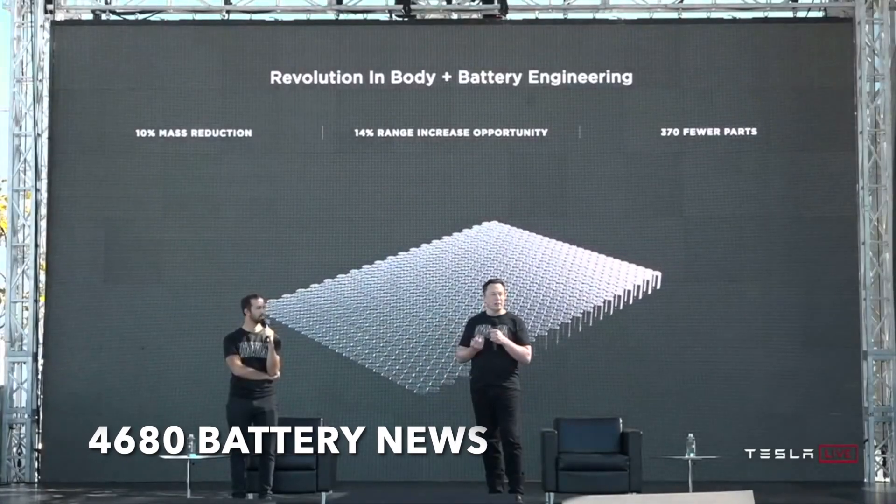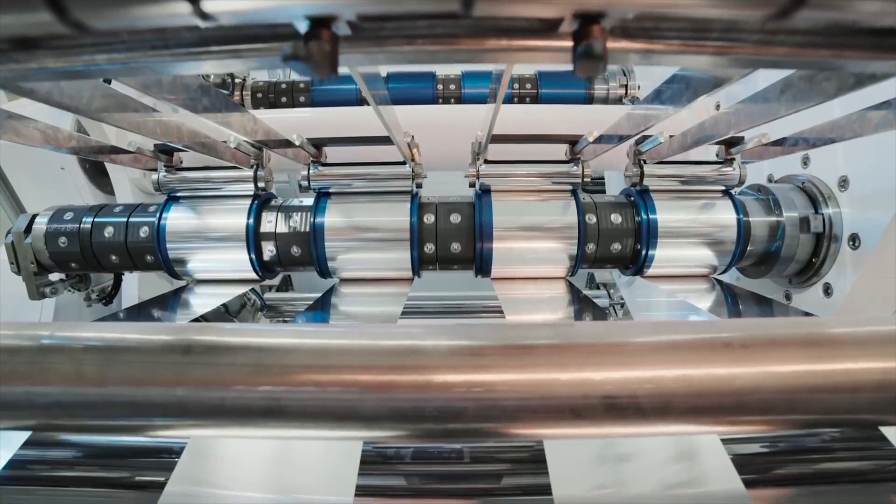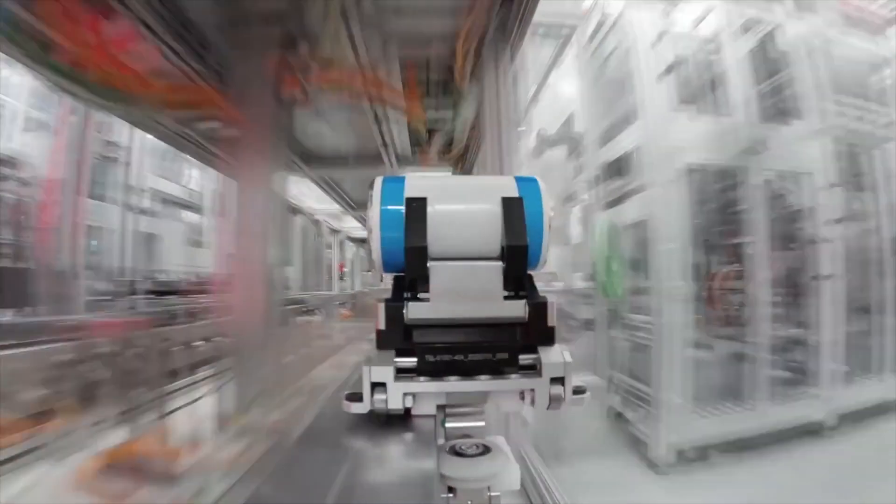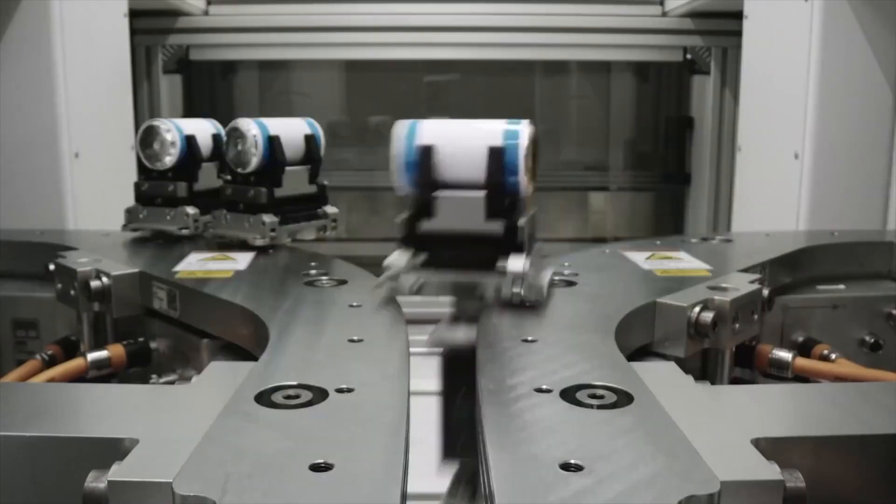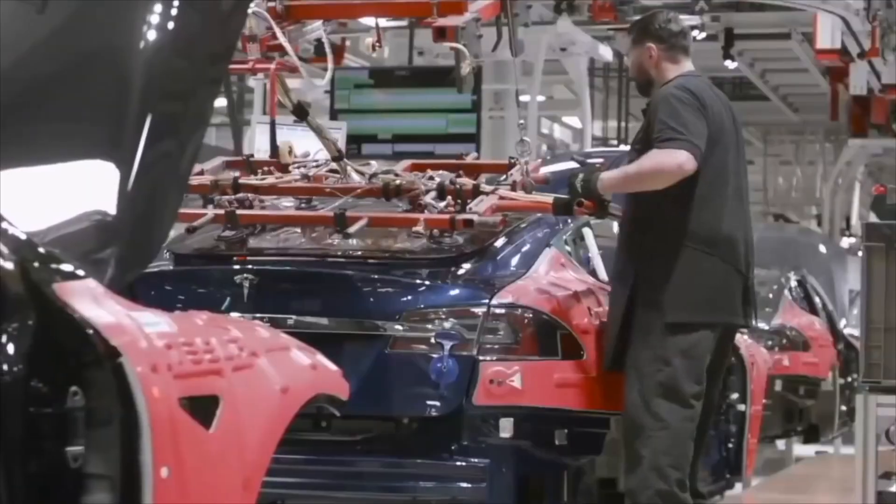Tesla 4680 cell production grows roots in Giga Texas. Materials for Tesla's 4680 cell were recently delivered to Gigafactory Texas, hinting that the EV maker may already be preparing to start test production of its custom batteries for next year.